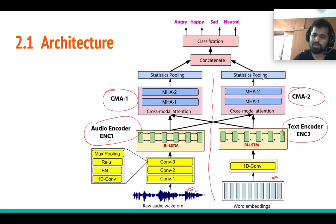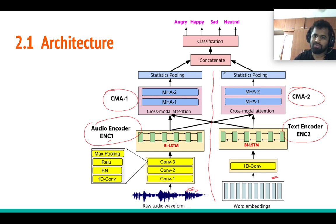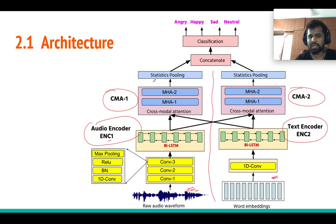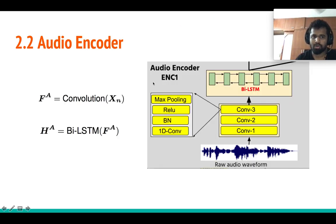We apply statistic pooling after both CMA1 and CMA2, then concatenate the two feature vectors — which carry information from both streams — and use them for classification with a softmax classifier. This is the whole idea and entire architecture of the paper.